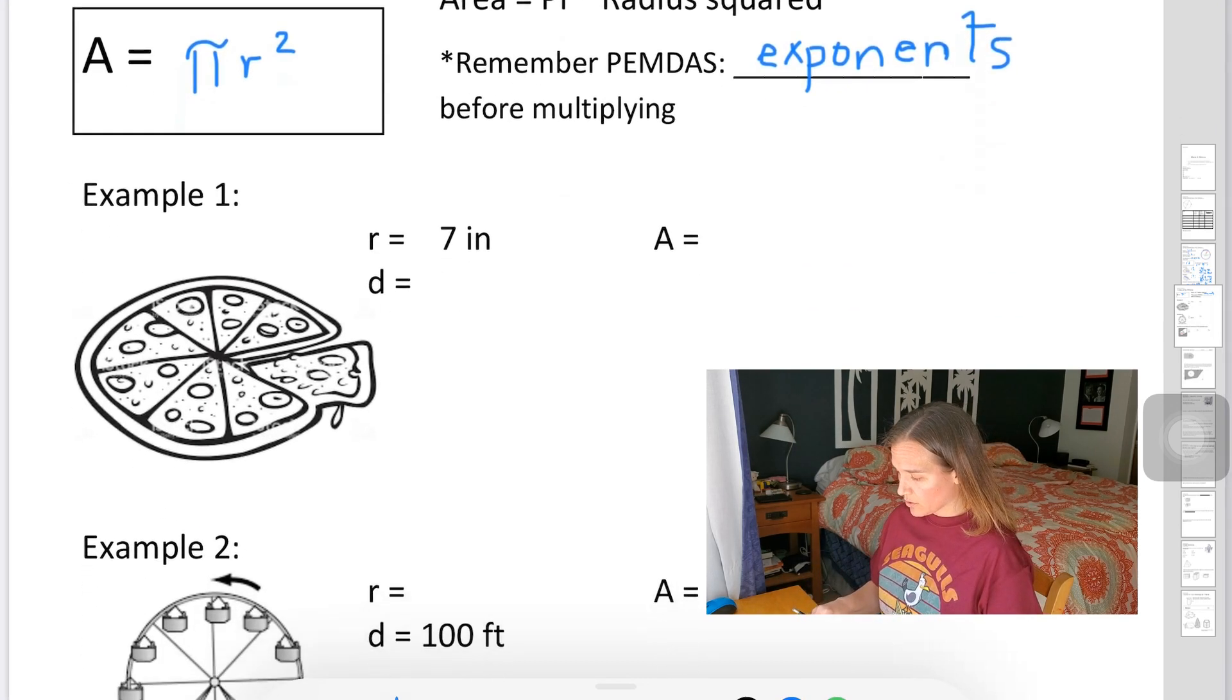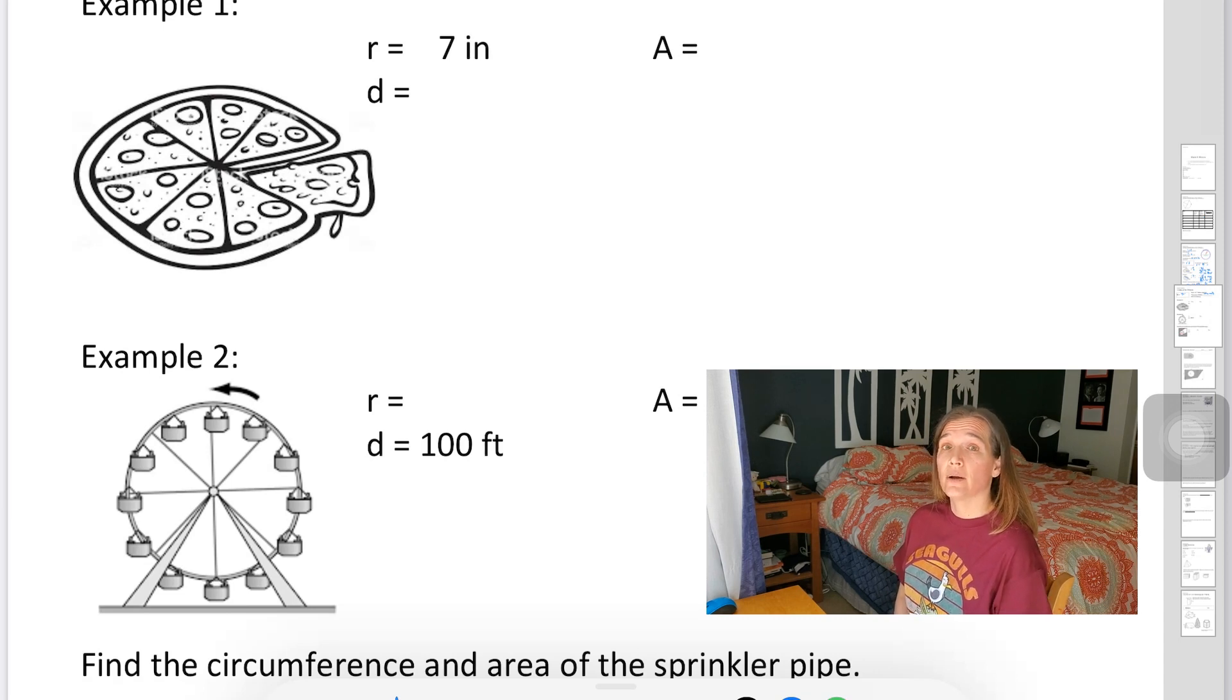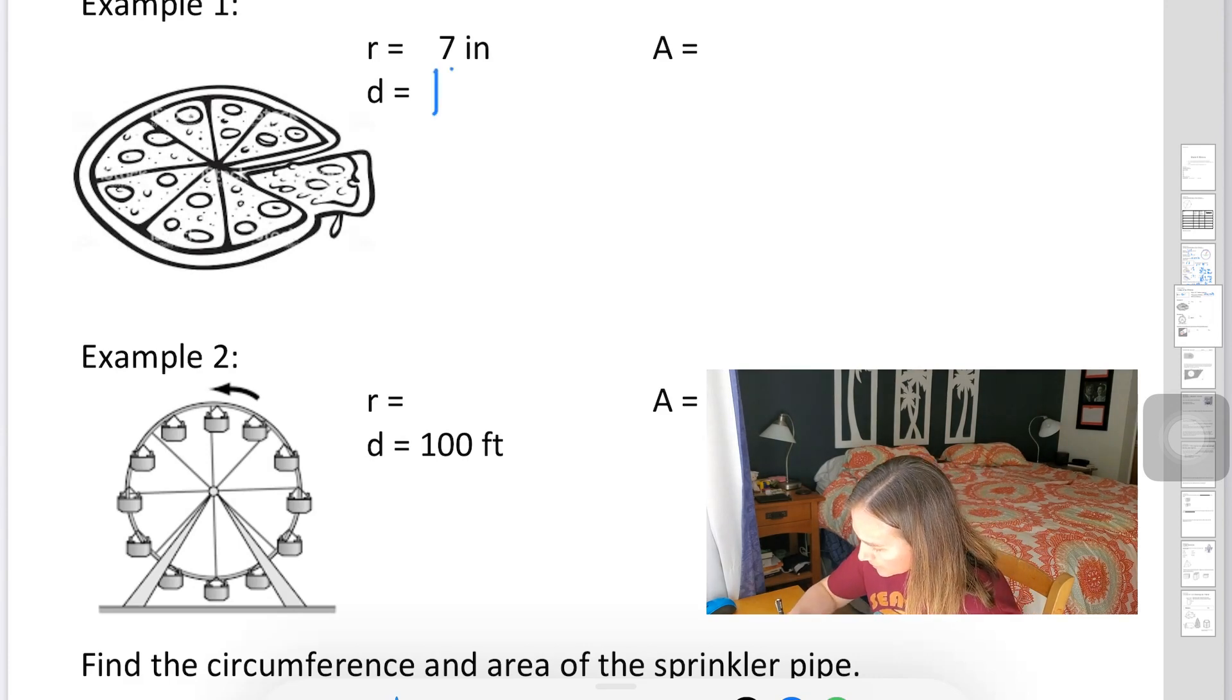All right, so we're going to go straight to our first example. And we've got some pizza here. Remember I told you to write out what the radius and the diameter are, especially once you have both problems in your wheelhouse. Because now at this point, it's easy to mix up which one you need. So write down what the radius and diameter are before you start. And then also write down the formula you need as you need it. So here, if our radius is 7 inches, then that means my diameter is going to be twice that, which is 14.